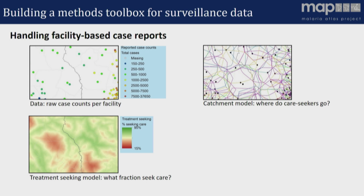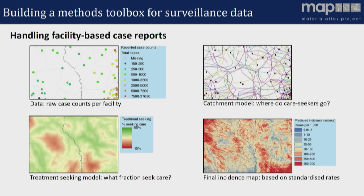Once we have an idea of the fraction that would seek care at all, the next question is: which particular facilities do we think any particular person might have gone to? So we start carving up the population into catchment populations. There's been a surprisingly sophisticated amount of modeling required to get that right. We can estimate our catchment denominators, standardize our counts and turn them into rates, and then put those rates into our geostatistical spatial modeling frameworks and generate continuous surfaces of estimated risk, like the one on the bottom right.